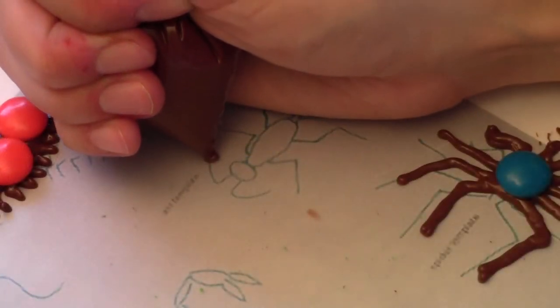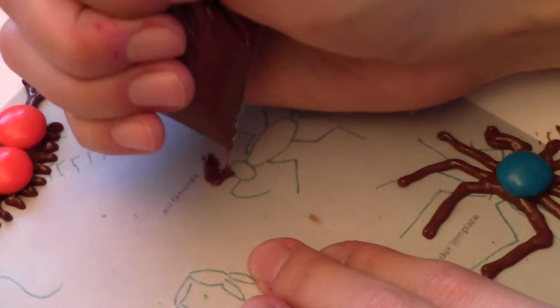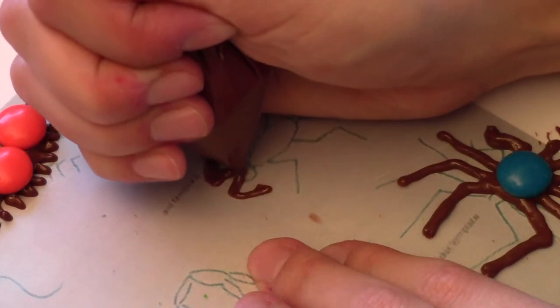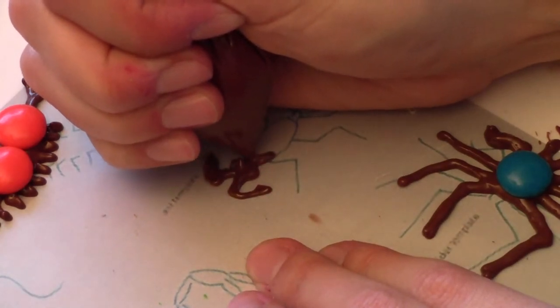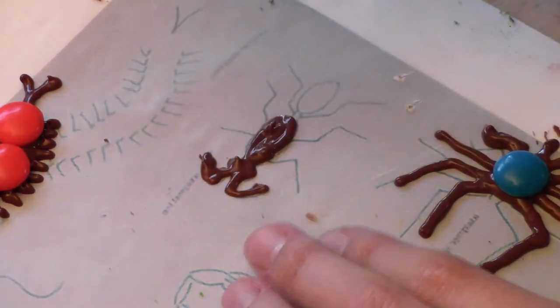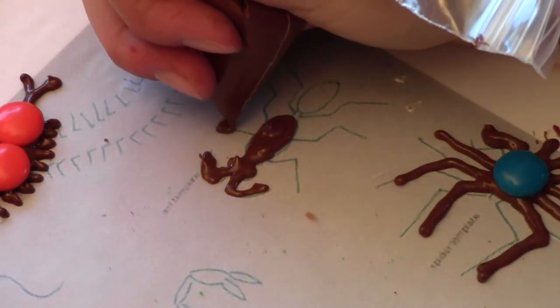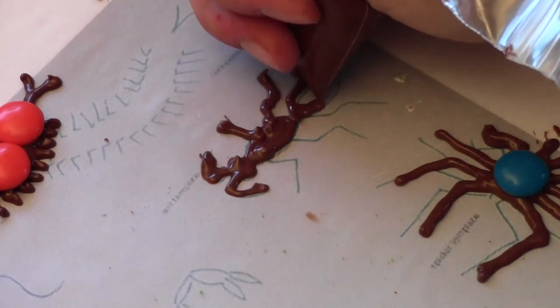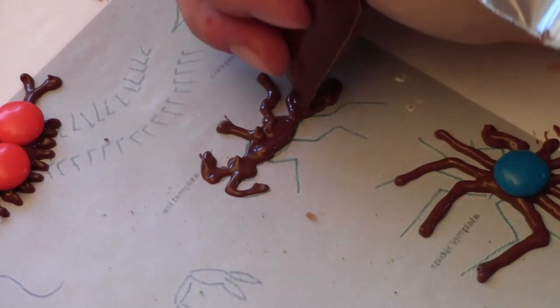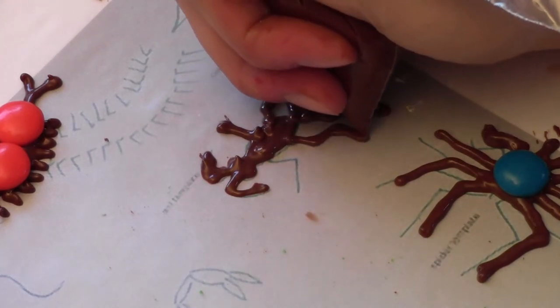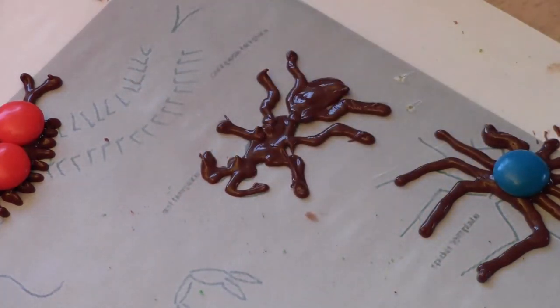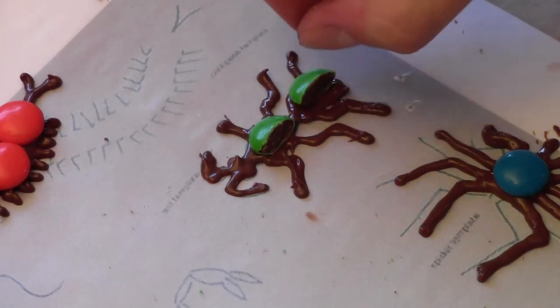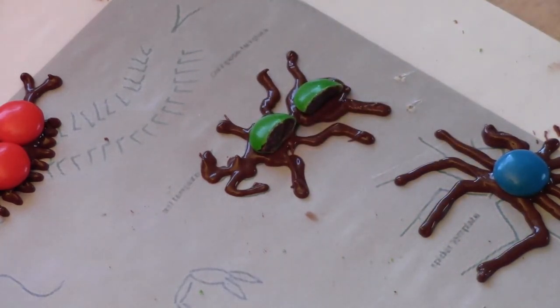To make an ant, we just outline the ant. Start with his... And like I said, you just kind of outline it as best you can. And then place your candy on it wherever you want it so that it kind of looks realistic.